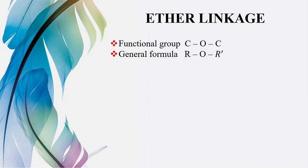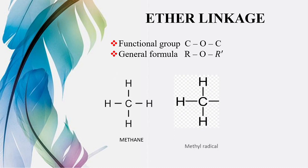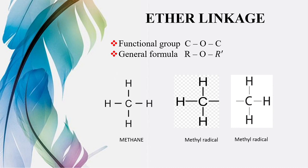Humare paas next hai ether linkage. Agar do carbon atoms ke darmiyaan oxygen maujood ho, to us group ko hum kahenge ether linkage. Iske liye humare paas do alkyl radicals ki zaroorat hoti hai. Jaise is waqt humare paas hai methane, isme se ek hydrogen remove kiya — yeh ban gaya methyl radical. Isi tarah ek aur methyl radical liya, kyunke hume jo oxygen hai wo carbons ke darmiyaan chahiye. In dono ke darmiyaan mein hai oxygen — ab yeh jo humare paas bond tayar hua carbon-oxygen-carbon ka, ise hum kahte hain ether linkage.